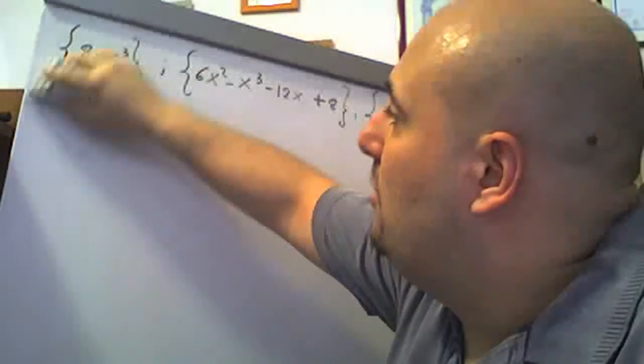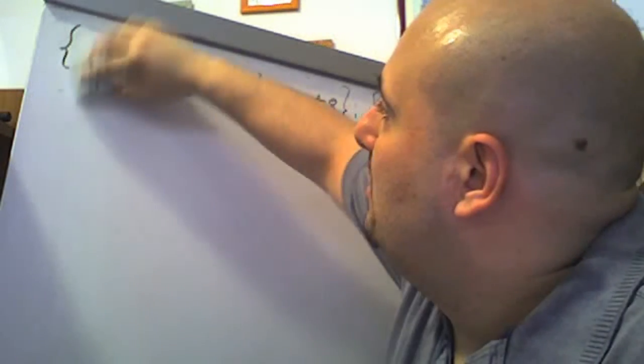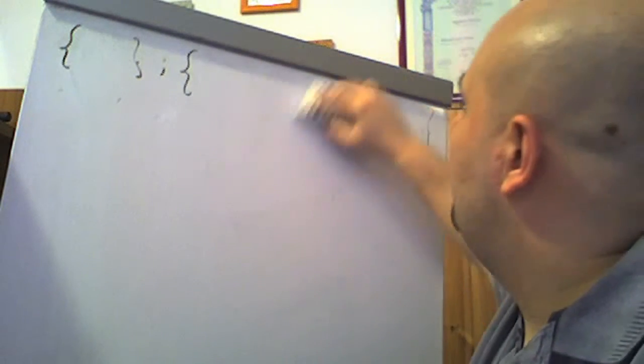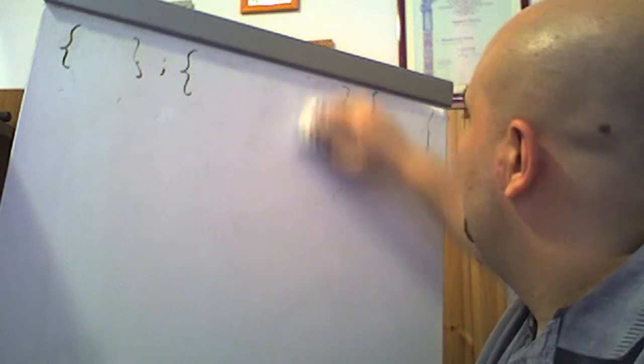Ricordo che il segno meno non va mai messo nel risultato del MCD né del MCM: dire x−2 o 2−x è la stessa cosa per via del valore assoluto.